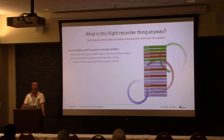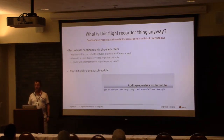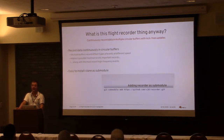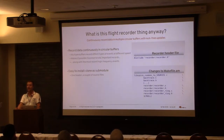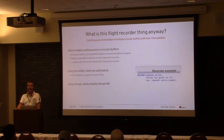How do you use it? It's fairly easy to install — you just clone as a submodule and add two files to your source files. Recorder.c is the recorder API itself, and recorder_ring.c is a lockless ring buffer implementation. It's fairly easy to use — it works mostly like printf, except you use 'record' instead of 'printf,' and you put the name of the recorder you stuff things in as the first argument. Standard printf format, but no backslash-n at the end.